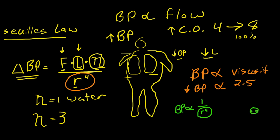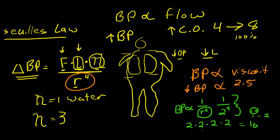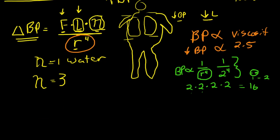What this means is if you increase the radius by a factor of 2 — so if you have a vessel that is 1 centimeter in diameter and you increase it from 1 to 2 — you are going to decrease blood pressure because it's inversely related. You are going to decrease blood pressure by 2 to the 4th power. 2 to the 4th power means 2 times 2 times 2 times 2, which equals 16. So by doubling the diameter of a blood vessel, you will decrease blood pressure by a factor of 16.